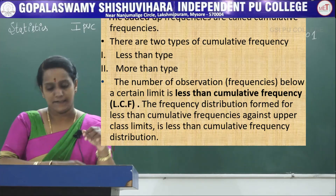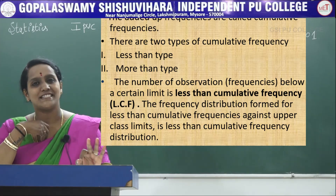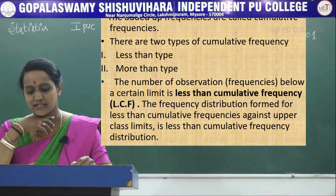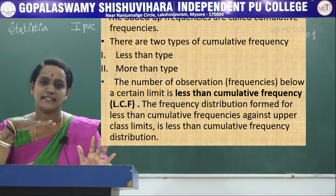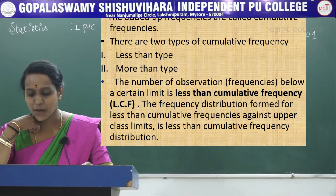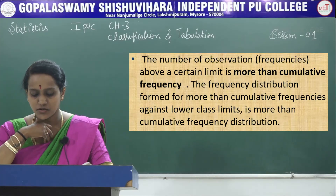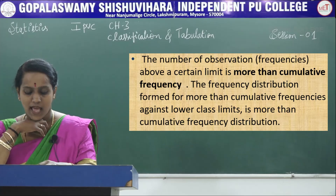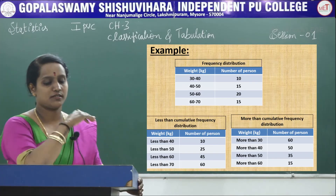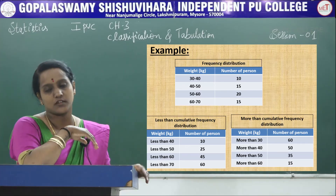Next is cumulative frequency. The added-up frequencies are called cumulative frequencies, and there are two types. Less than cumulative frequency: the number of observations or frequencies below a certain limit. The frequency distribution formed for less than cumulative frequencies against upper class limits is the less than cumulative frequency distribution. More than cumulative frequency distribution is formed for more than cumulative frequencies against lower class limits.